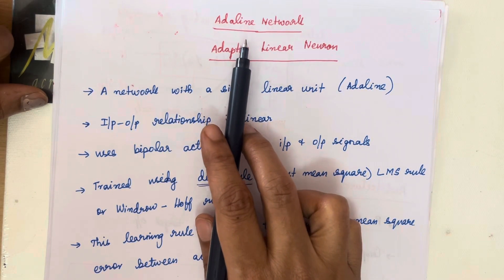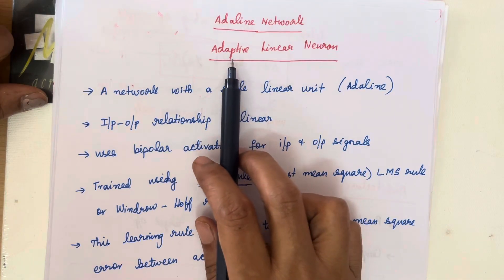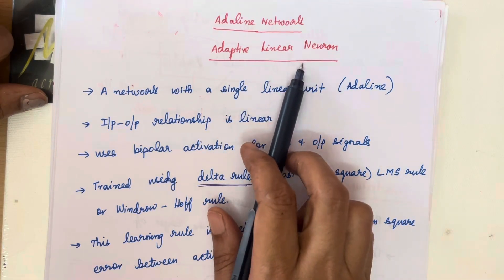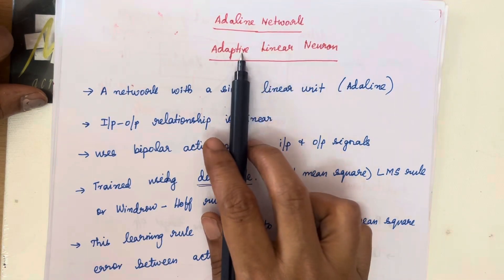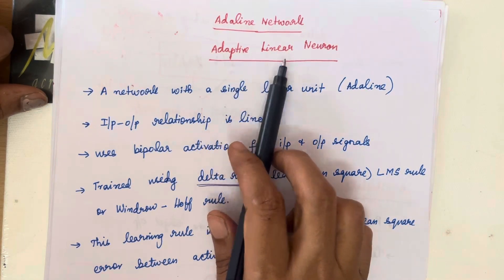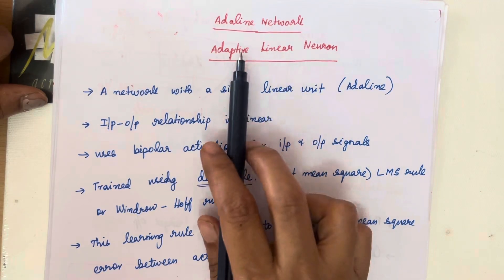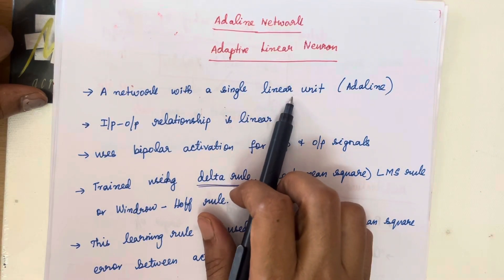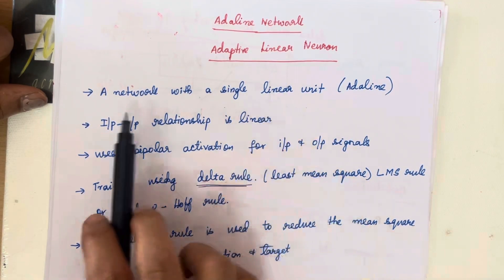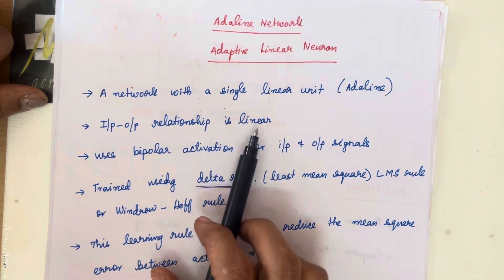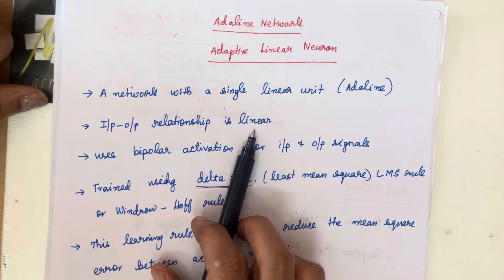ADALINE network is otherwise called adaptive linear neuron. The meaning of adaptive linear neuron is that it will have a single linear unit, meaning the input-output relationship will be linear.